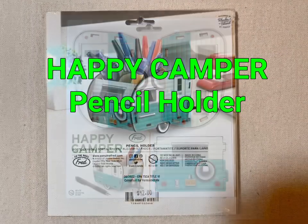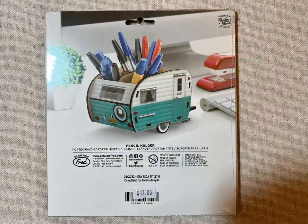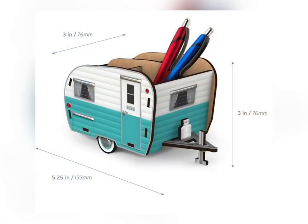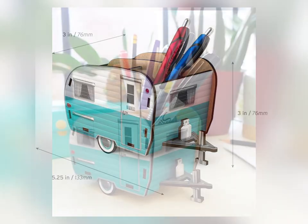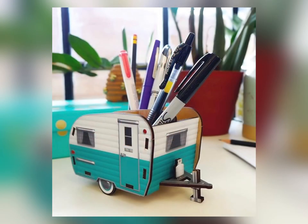Today we're going to be looking at the Happy Camper Pencil Holder that you put together yourself. It's 5 inches by 3 inches by 3 inches and you can load it up with pencils or anything else you want.